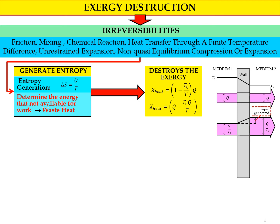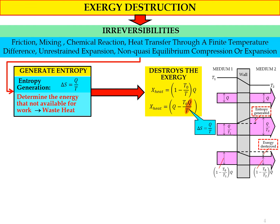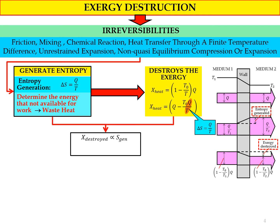Expanding the exergy equation, we get: X_exergy equals Q minus T_not times Q divided by T. We can see that Q divided by T is the entropy term. Looking at the exergy from heat: at medium one it is (1 − T₀/T1)×Q, and at medium two it is (1 − T₀/T2)×Q. The difference gives us the exergy destroyed, which is directly proportional to entropy generation.